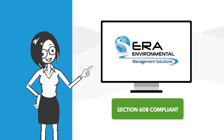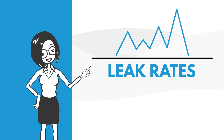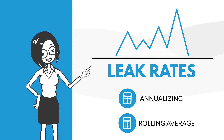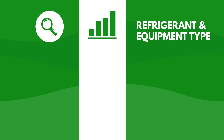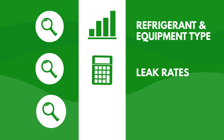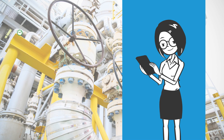ERA's Section 608 compliant refrigerant management solution allows her to define metrics for leak rates and utilize built-in threshold calculations based on EPA's annualizing or rolling average methods. She stays in compliance by tracking outputs for each refrigerant and equipment type, accurate calculation of leak rates, and reporting requirements if the emissions are above the EPA-defined threshold using advanced software features.